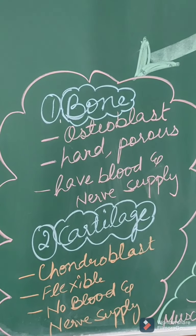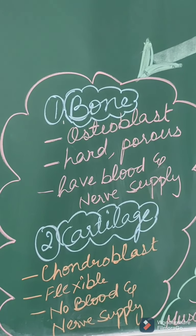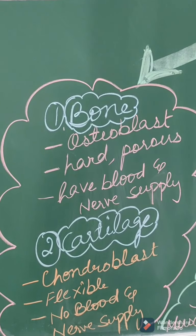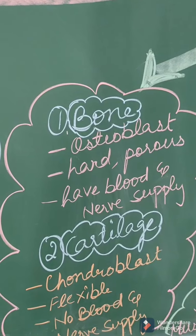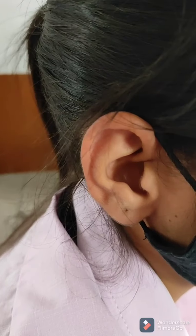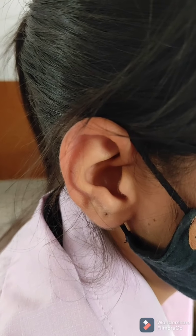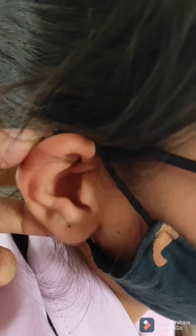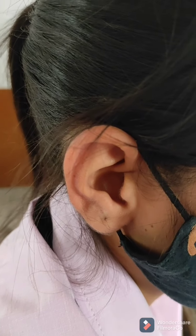The position of bone is clear to everyone — it makes the framework of our body; this is the skeletal system. Let's see the example of cartilage present in the external ear. You can see this is the external ear and we can bend it. Why? Because of the presence of cartilage in it.